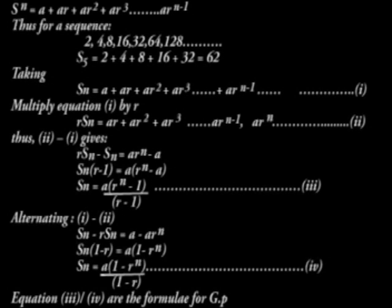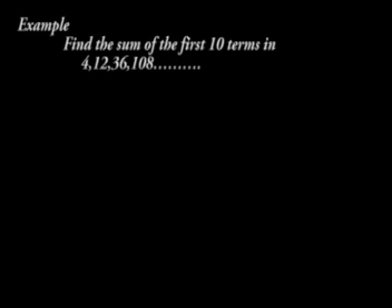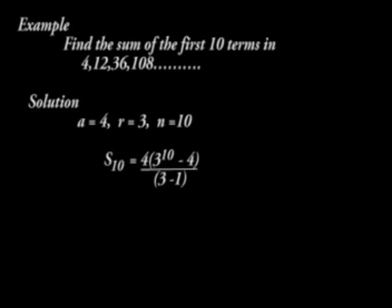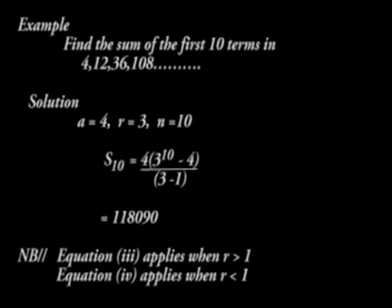For example, find the sum of the first 10 terms in the sequence 4, 12, 36, 108. Here, A is equal to 4, R is 3, N is 10 and S10 will be 118,090.